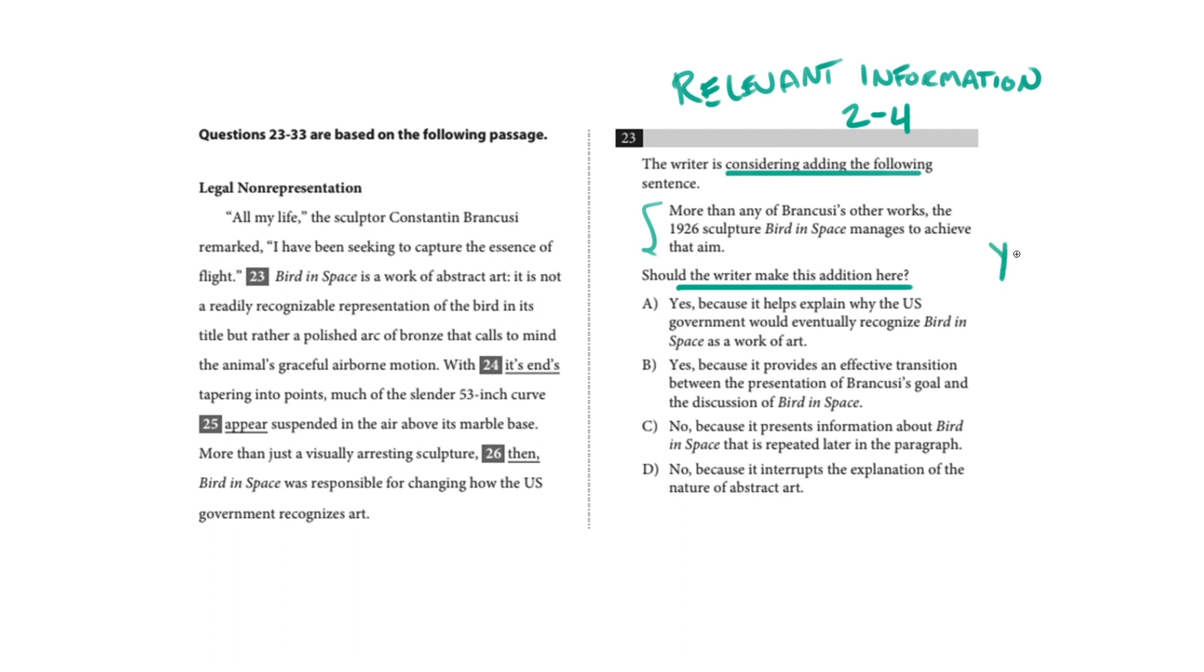First of all, there's a binary, like a this or that choice, a yes or no choice, and then there's an if so, why? If no, why? What's nice as a strategy is we can first make that binary yes and no decision, because there's two yeses and two nos, we can knock out half the answers, and then we can free up some brain space to consider the rationale.